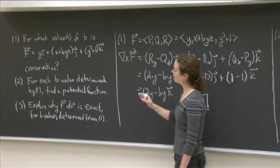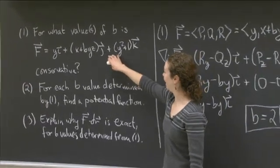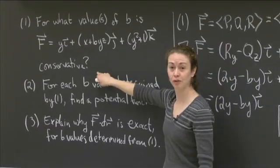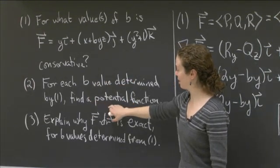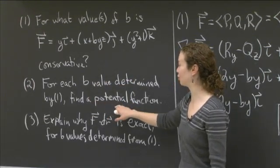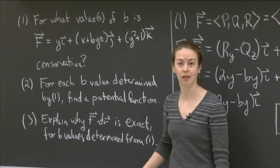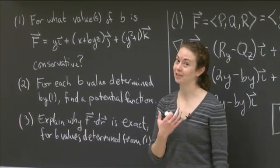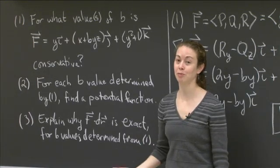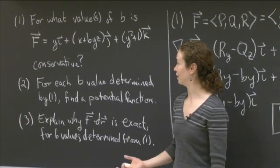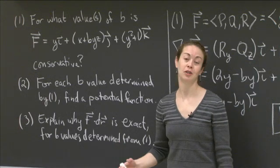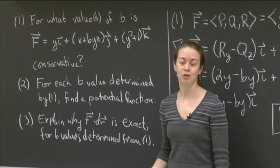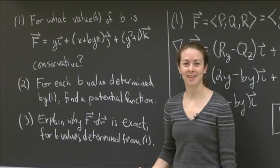To recap: we started with a vector field F, found the value b = 2 that makes it conservative, and then used the line segment integration technique from class to find a potential function. This is the same type of problem as when F was a two-dimensional vector field, extended to three dimensions.